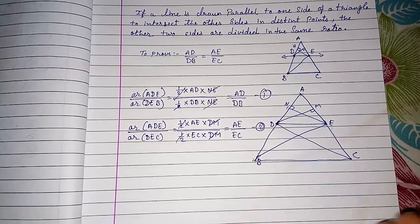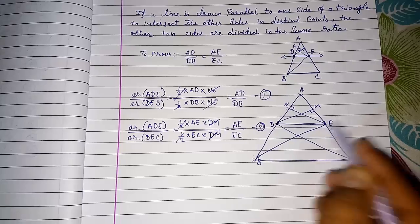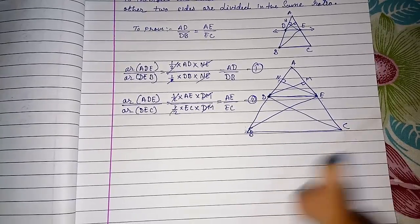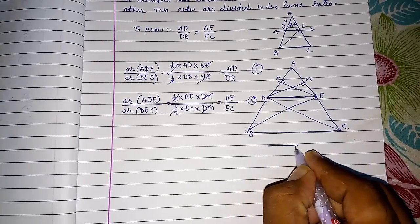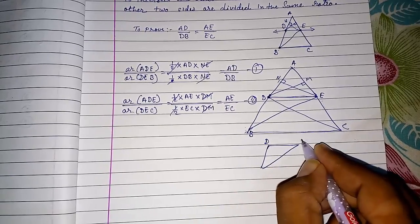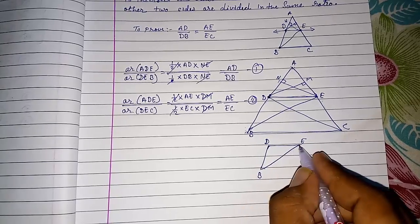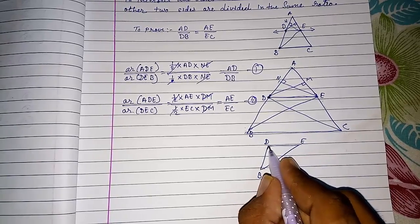We know that in lower standard we had learned if two triangles having the same base, look here, this two triangles are having the same base. I am drawing it again. This is D, E, B.